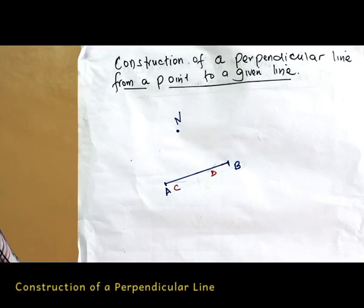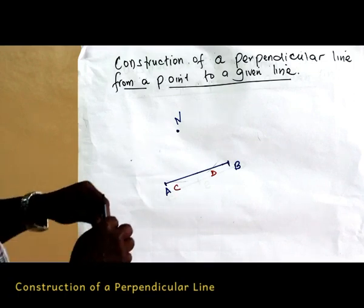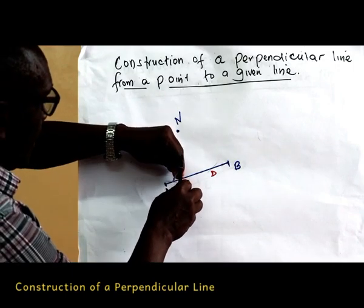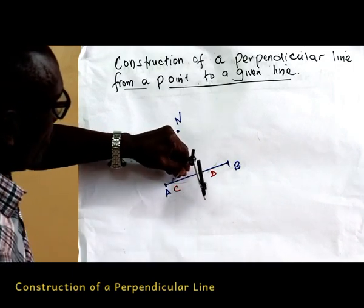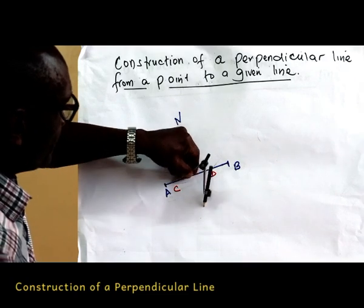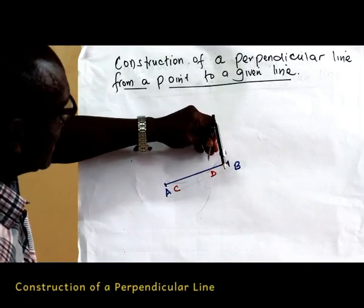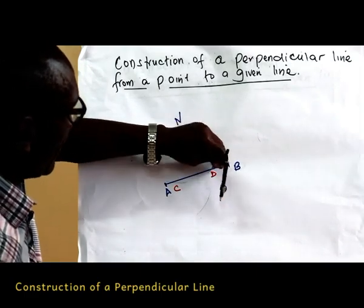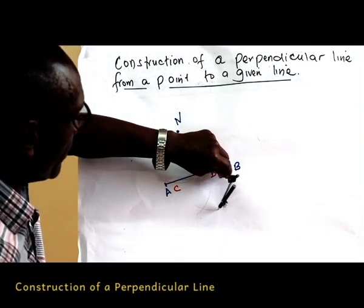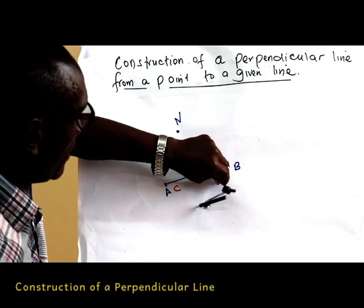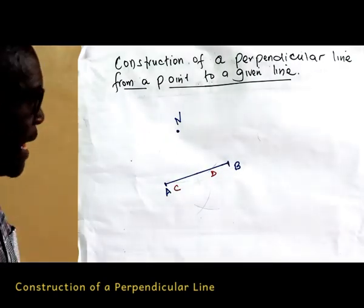Now using C and D as centers and a suitable radius, construct two arcs intersecting on the other side of line AB at the point F.